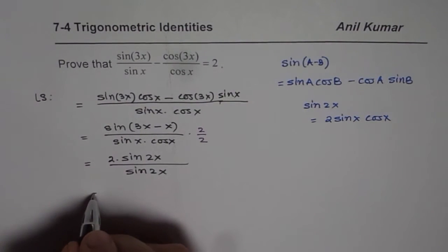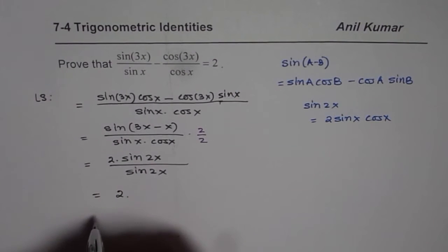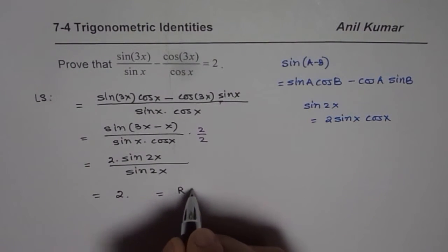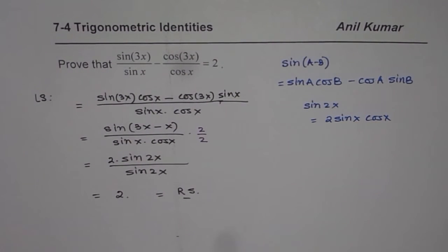Now, sin(2x), sin(2x) cancel out, and we are left with 2. Which is same as right side. Do you see that? So, that is the beauty of solution.